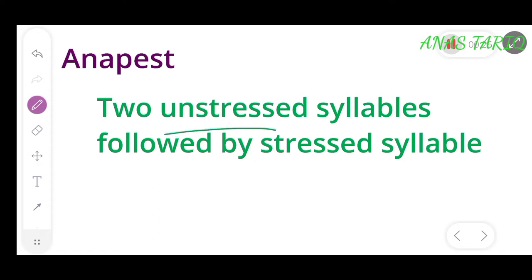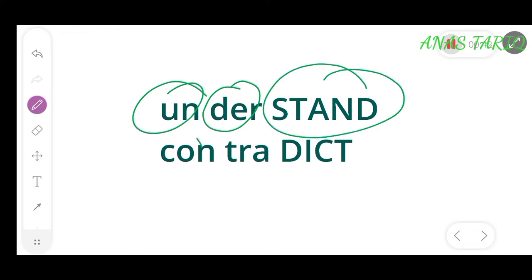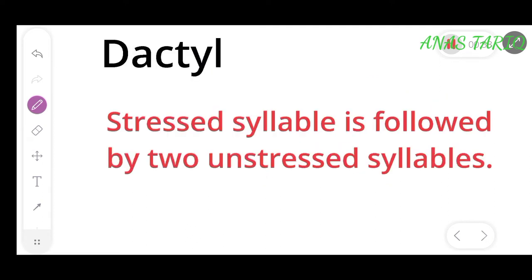For example, in words like 'understand' and 'contradict.' In 'understand,' the syllables 'un' and 'der' are unstressed, which are followed by the stressed syllable 'stand.' In 'contradict,' 'con' and 'tra' are unstressed, followed by 'dict,' which is stressed. So this is anapest: two unstressed syllables followed by one stressed syllable.